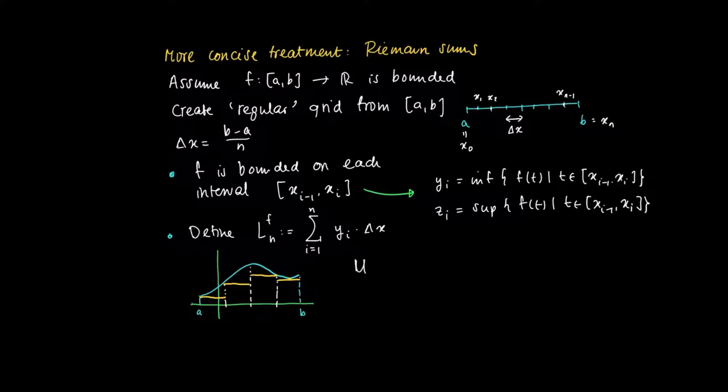Something similar can be done if we pick instead of the infima, we pick the suprema. So U_n(f) is the upper estimate which is just summing over z_i times Delta X. Here again we have a graph of the function, and now instead of taking the infimum we pick the suprema.